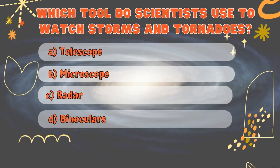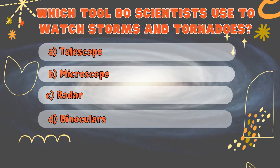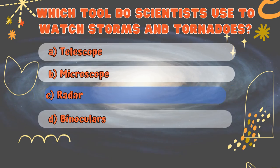Move on to question 7. Which tool do scientists use to watch storms and tornadoes? Yes! They use radar to track storms.